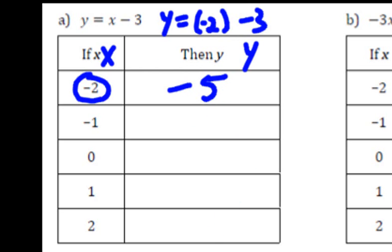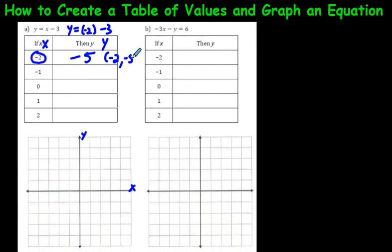We could graph that right now on this Cartesian plane. This is the y-axis and this is the x. To graph the ordered pair — negative 2, negative 5 — you start with negative 2 on the x-axis and then go down 5: 1, 2, 3, 4, 5. The numbers are not put on this graph already, but I'm just going to quickly go through the rest.